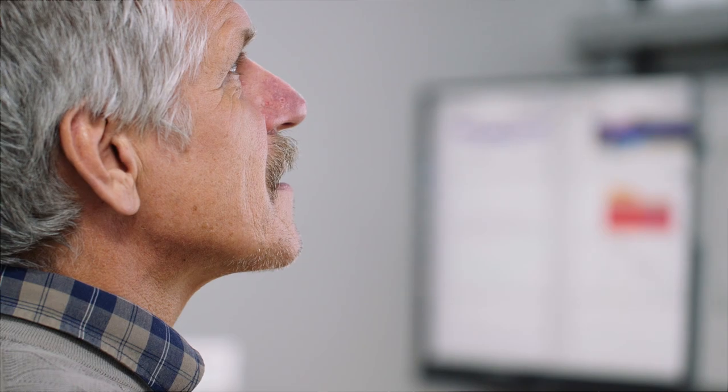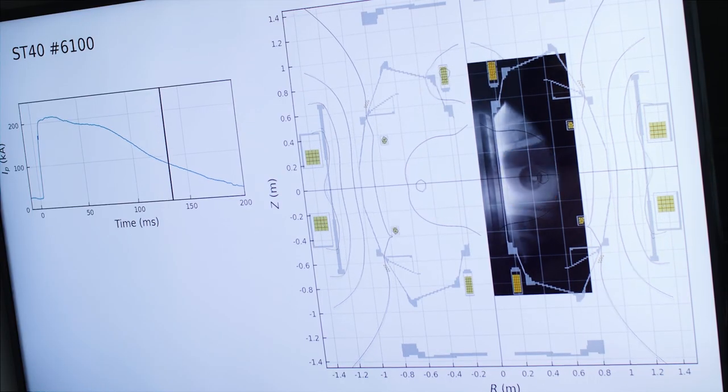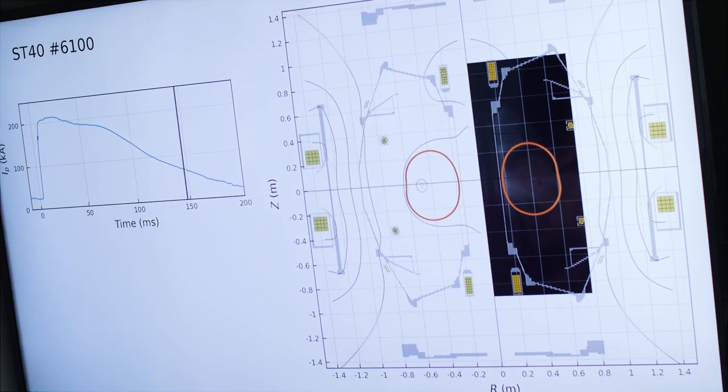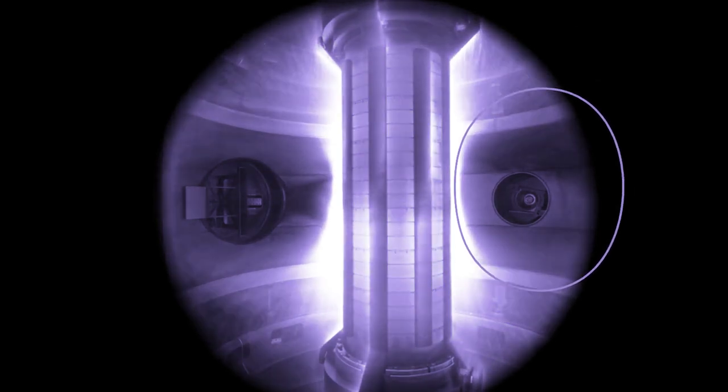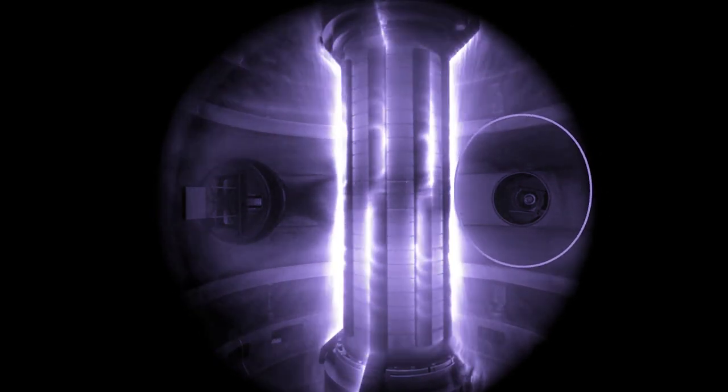Say the plasma is sitting at the mid-plane of the device but maybe it's further out radially than the operator would like. The PCS will then automatically see that, detect that and correct it, push the plasma a bit further in to the position that the operator wanted it to be sitting at.